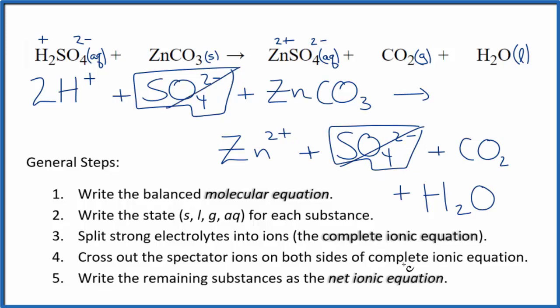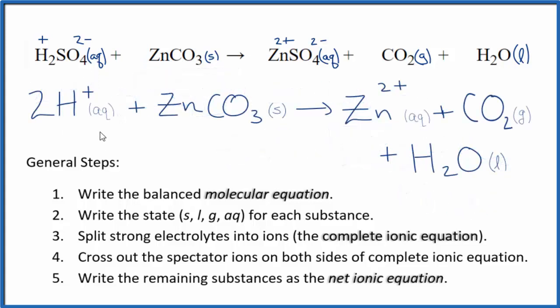And once we do that, we have our net ionic equation for H2SO4 plus ZnCO3. I'll clean it up and write the states. We'll have our net ionic equation. So this is the balanced net ionic equation for sulfuric acid plus zinc carbonate.